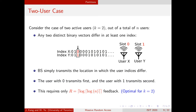As a simple example, consider the case where there are two active users. We index the n users using log n bits. We can be certain that the binary representations of any two active users' indices must differ in at least one bit position. Thus, a viable feedback strategy is for the base station to transmit the location where the two indices differ — the user with a zero at that location transmits first, and the user with a one goes second. The total feedback cost for this strategy is order log log n. In fact, this is the optimal scheme for the case of two active users.